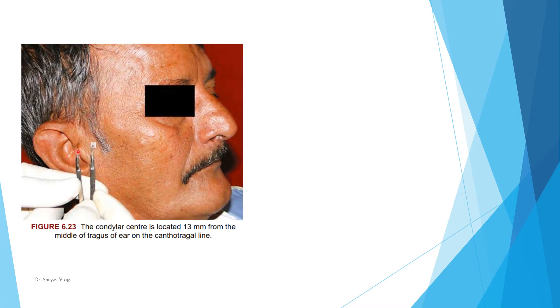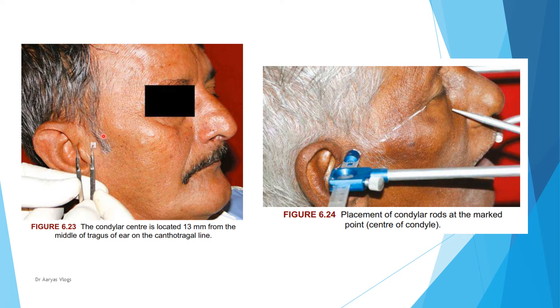In the fascia type facebow, the condylar center is located 13 mm from the middle of the tragus on the canthus-tragus line. The condylar rods are then placed at this marked point — the center of the condyle.